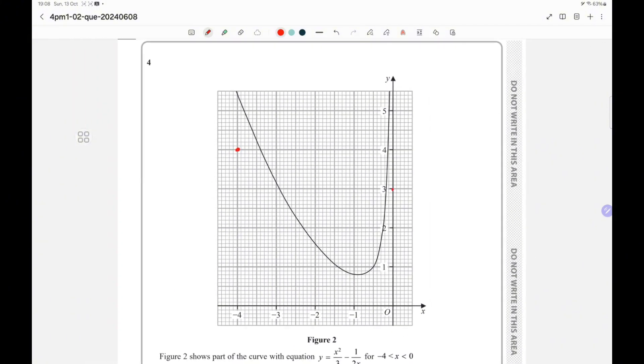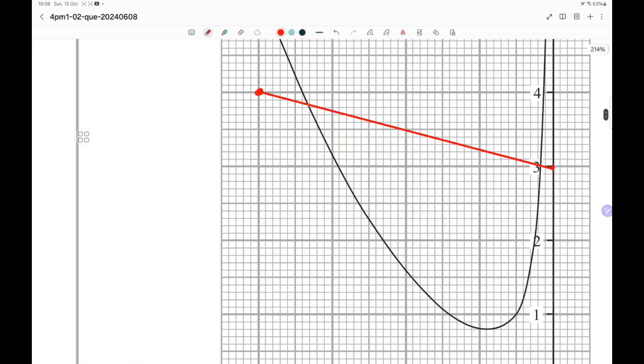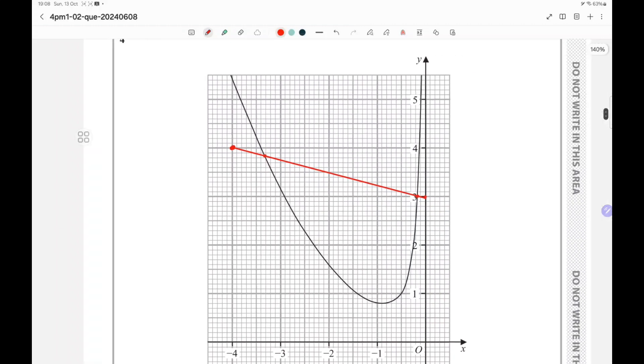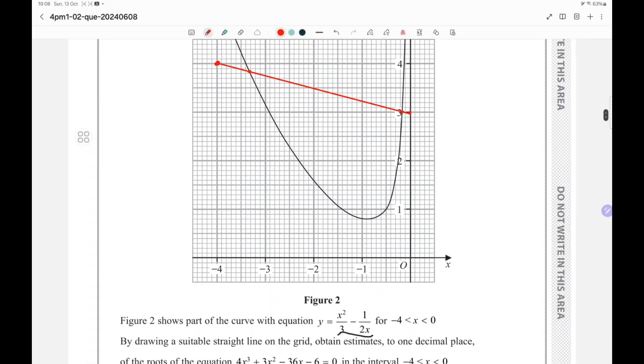And then we are going to join these two points. The intersecting points which came over here are our roots. I can clearly see one of the points is minus 0.2 and another point is minus 3.4. So these are the values of our roots.